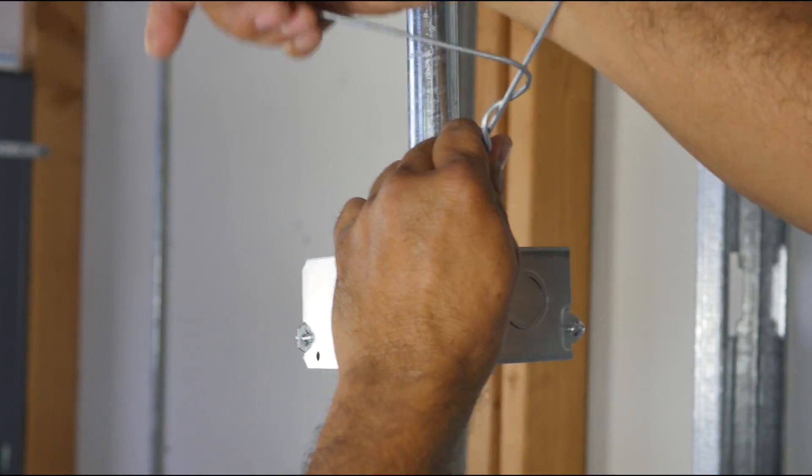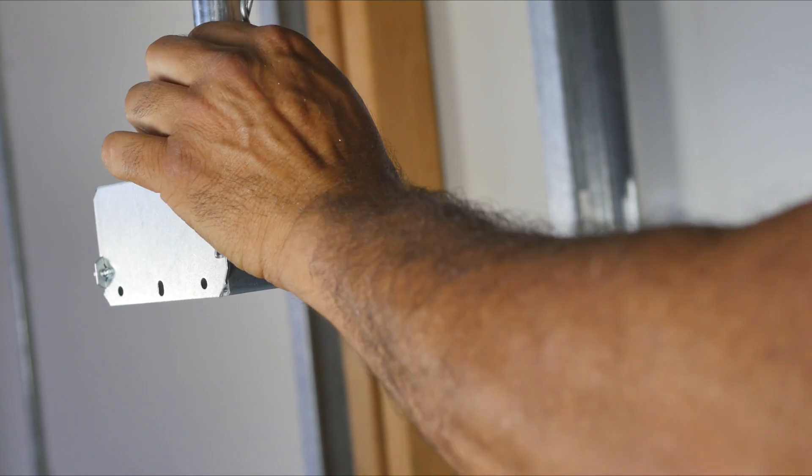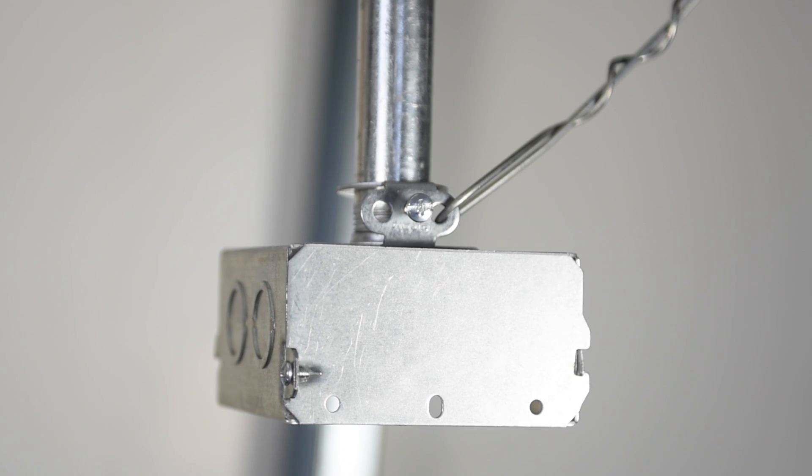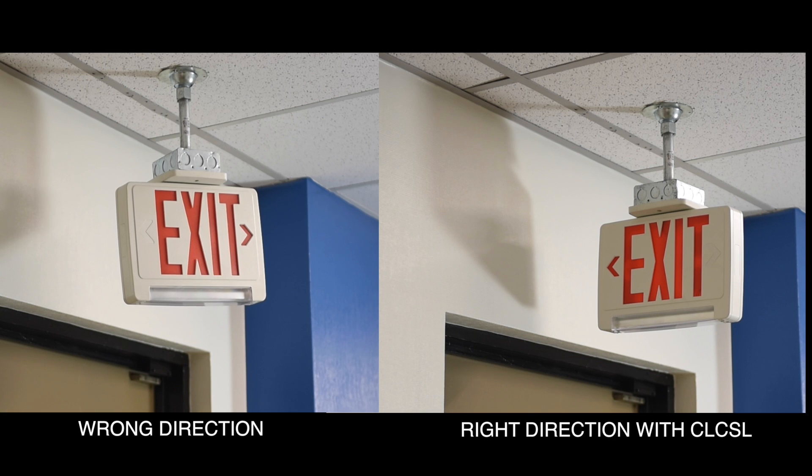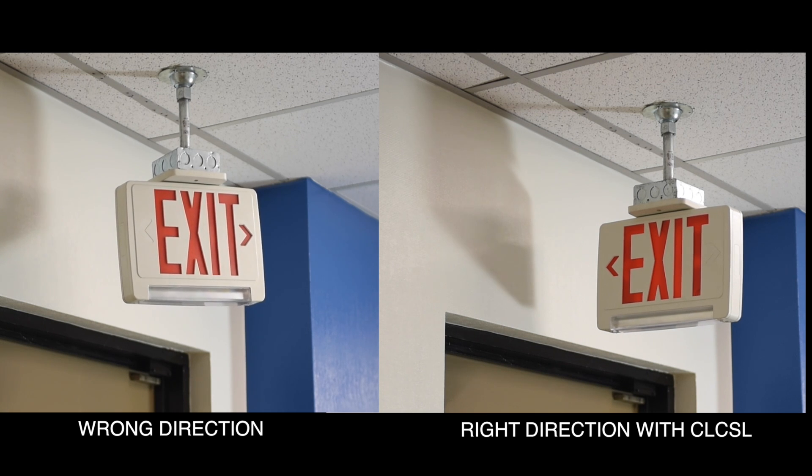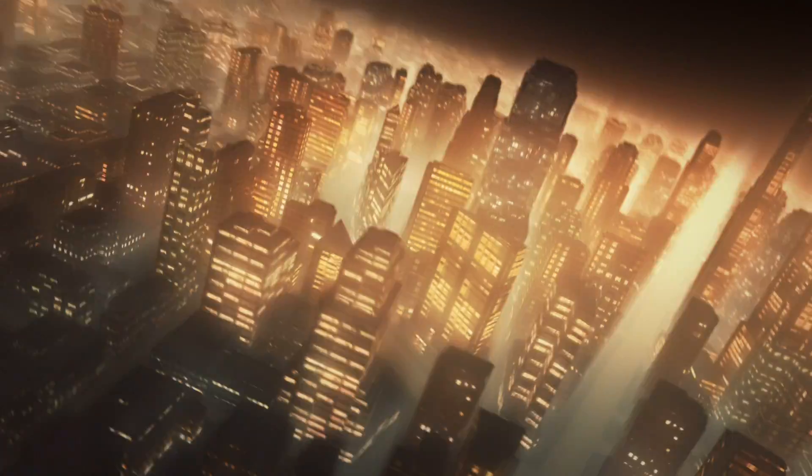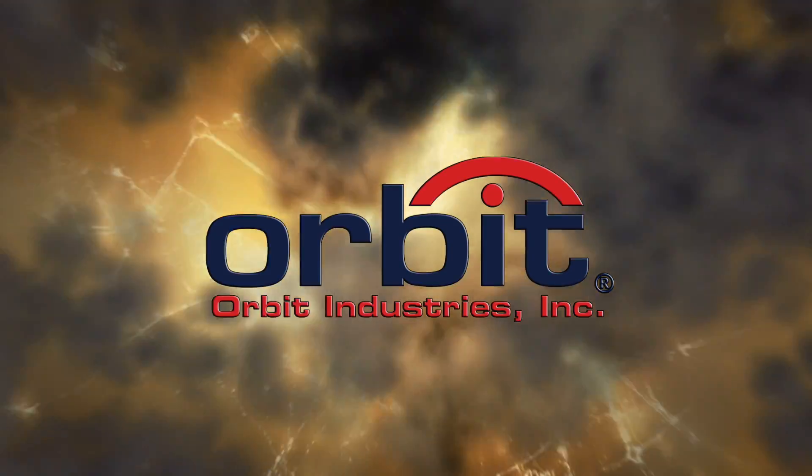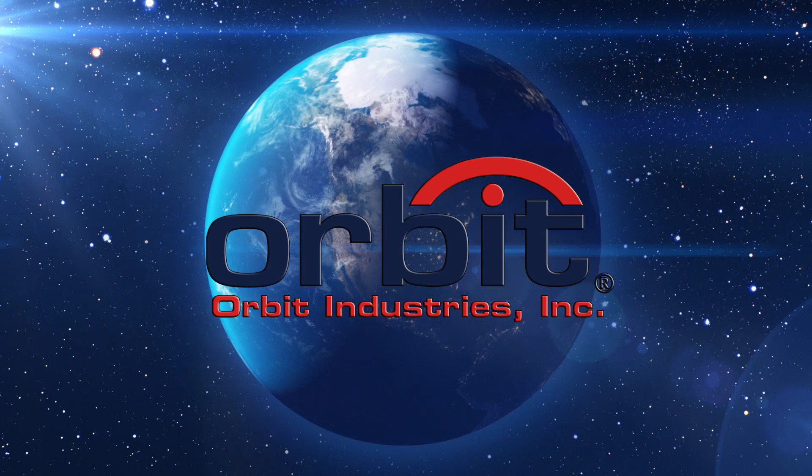Orbit's innovative CLCSL is a cost effective replacement for standard rigid threaded conduits by offering a greater amount of security in areas with high motion disturbances and where protection against seismic activity is needed. Orbit Industries, creating safe and secure solutions for hanging fixtures.